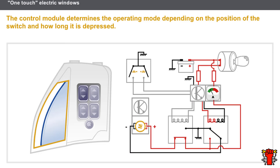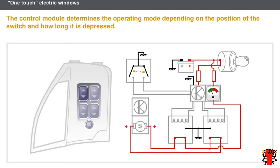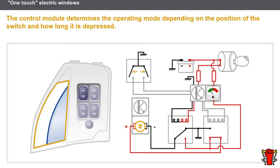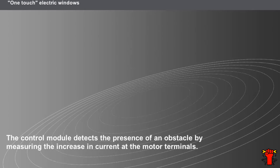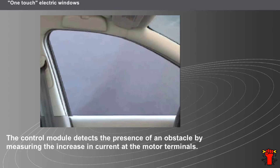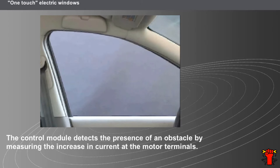The one-touch control is activated by the second touch on the switch, which emits a brief earth pulse. The control module receives the earth pulse and switches the window motor into one-touch mode. The one-touch electric window also includes a child safety mechanism known as anti-pinch.